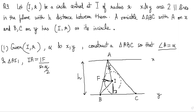IA is the distance from the incenter. In this right angle triangle, sine(alpha/2) equals IF divided by IA. So therefore, IF — since it was the radius — IA equals R divided by sine(alpha/2). Notice here that R was already given to us and alpha was given to us, so this part is a constant.